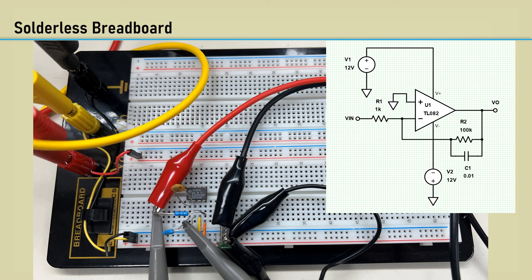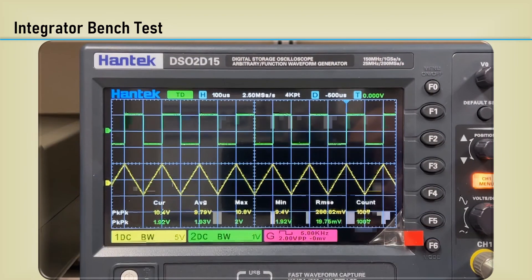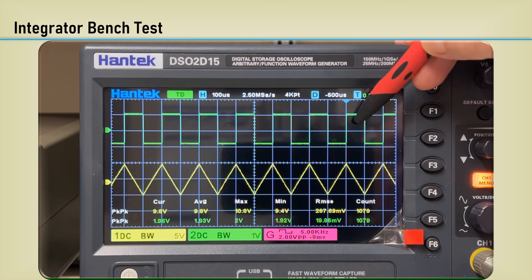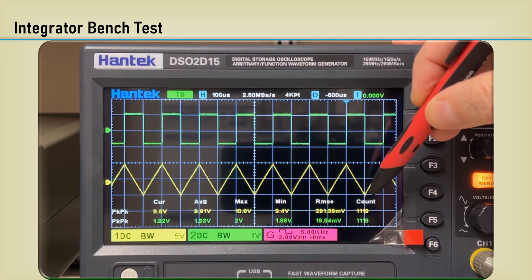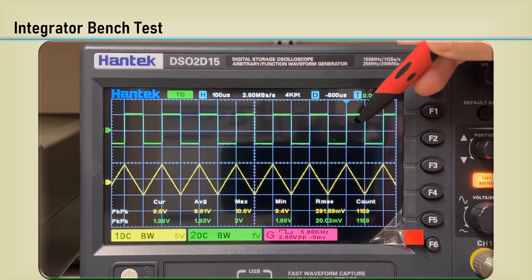Here's that simple integrator circuit on the scope. The input is in green, the square wave, it's plus 1 and minus 1. And then the output is 10 volts peak to peak, making a triangle from a square wave.